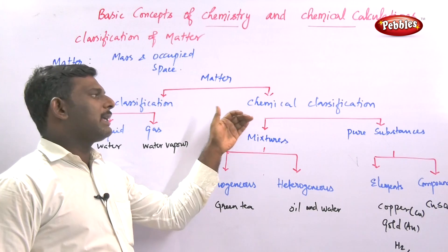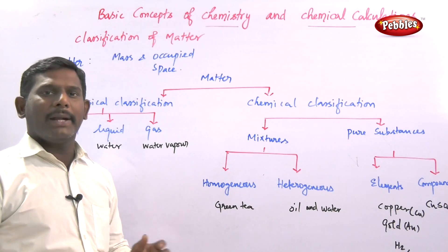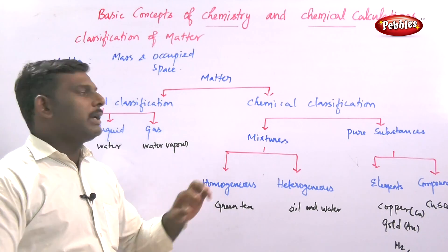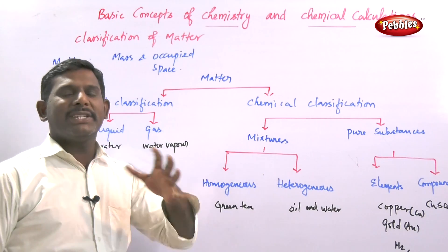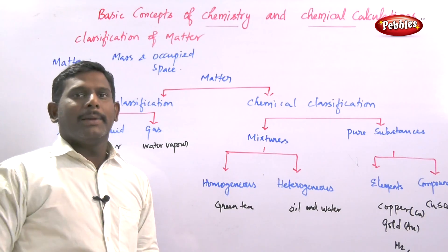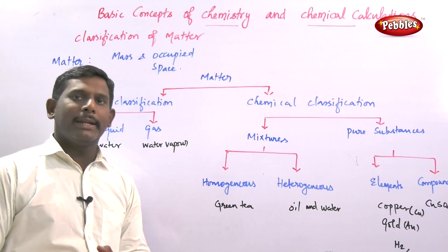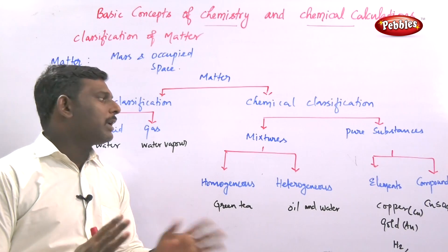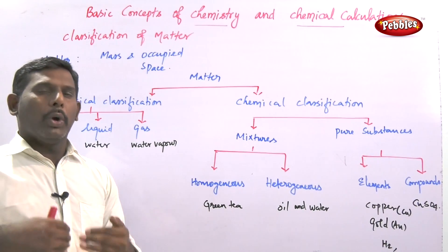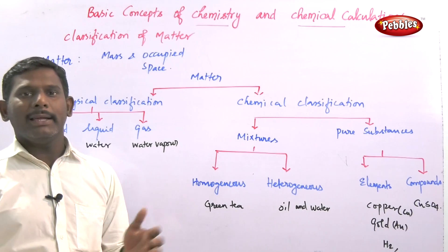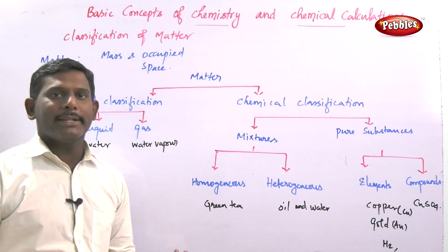The next case is chemical classification. Chemical classification divides matter into two types: one is a mixture and another is pure substances. A mixture consists of more than one chemical entity, and at the same time there is no chemical interaction between them.